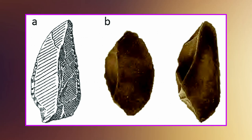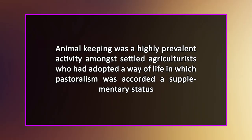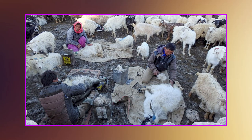Some hunting-gathering tribes have observed how animals were domesticated and nurtured since the beginning of the practice of pastoralism. It has been shown that animal keeping was a highly prevalent activity among settled agriculturists, who adopted a way of life in which pastoralism was accorded a supplementary status. A comparison of the two forms of sustenance is a useful beginning point for understanding the circumstances that may have given rise to nomadism among pastoralists, as opposed to a settled mode of living among agriculturists.